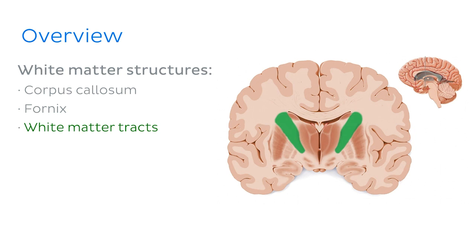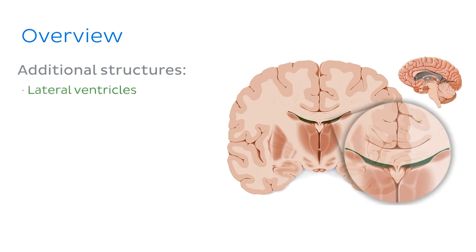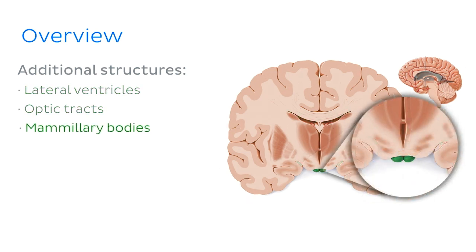Next, we'll look at some of the named cortical regions visible in this coronal section. And finally, we'll identify a few additional structures: the lateral ventricles, the optic tracts, and the mammillary bodies.